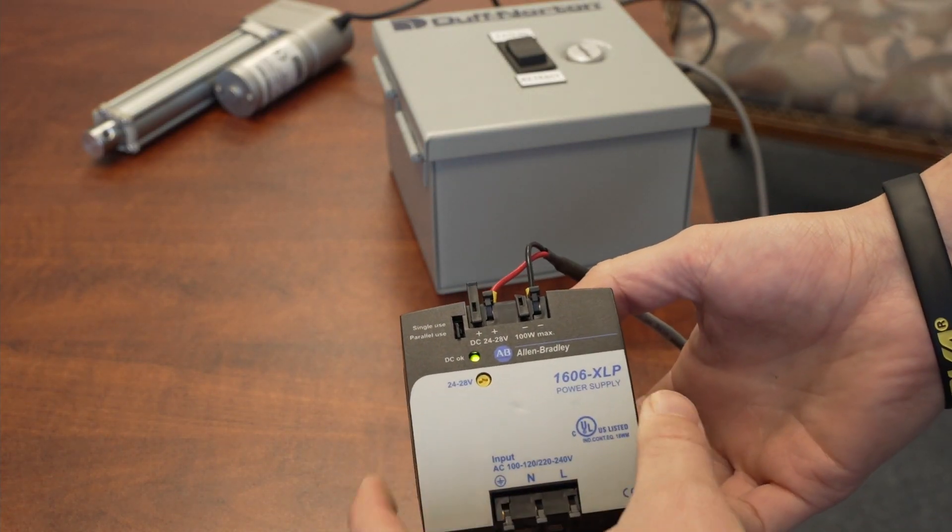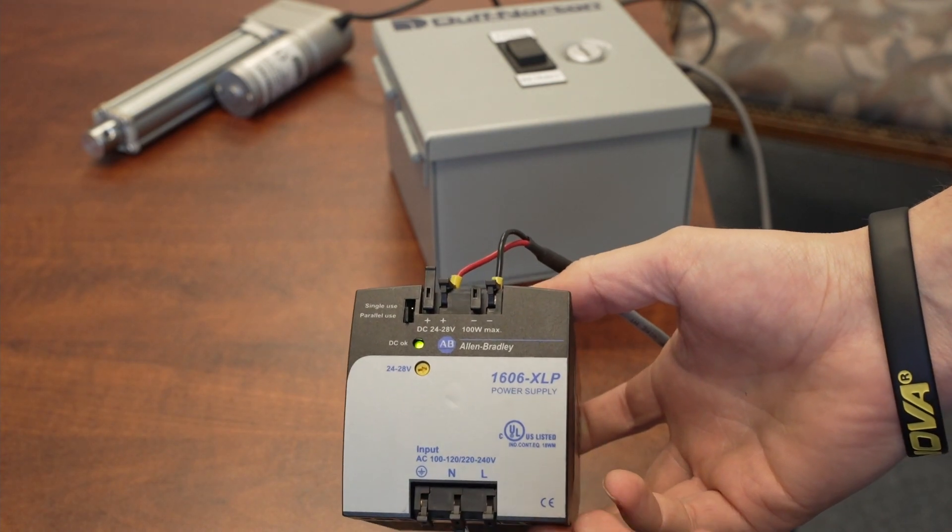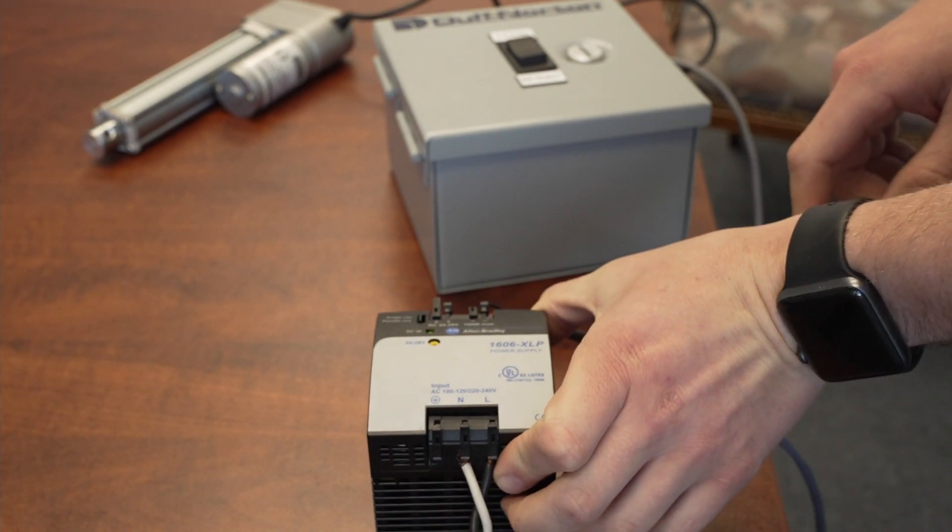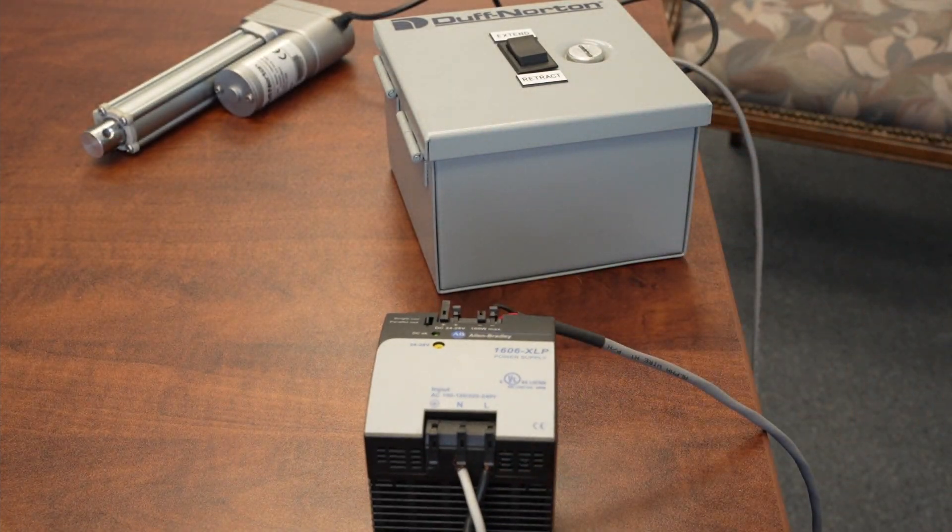For this example, we're going to have a 24 volt power supply, positive to positive, negative to negative, and the power supply going to the 115 volt outlet.